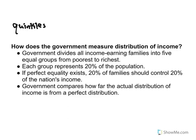Each group represents 20% of the population. If perfect equality exists, 20% of families should control 20% of the nation's income, 40% should control 40%, 60% should control 60%, and so on. Of course, that's perfect equality, which no nation has yet to achieve.